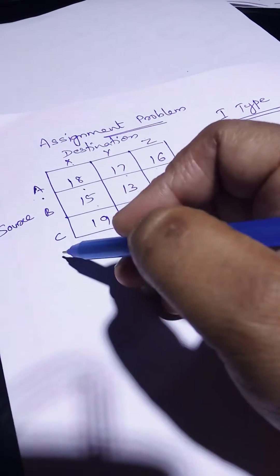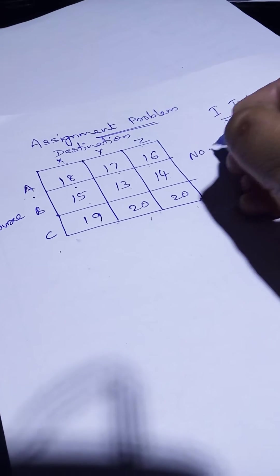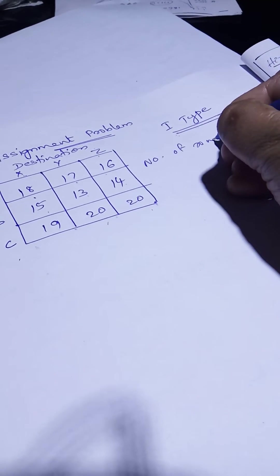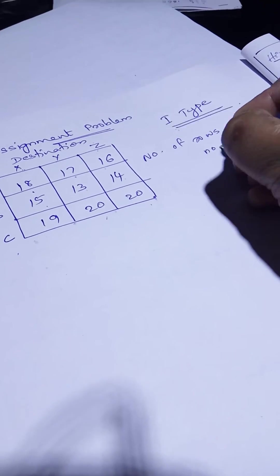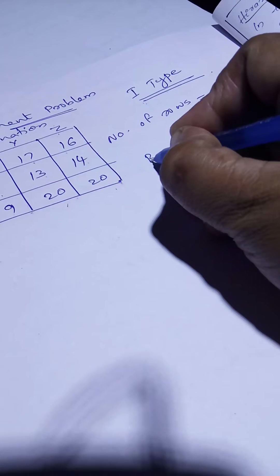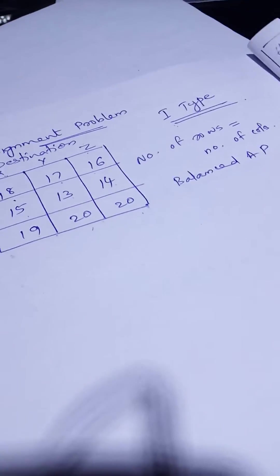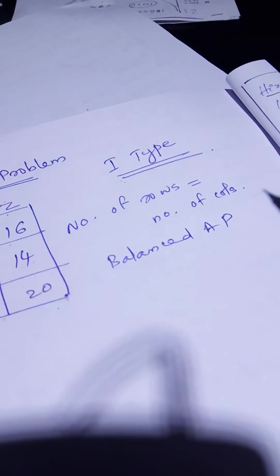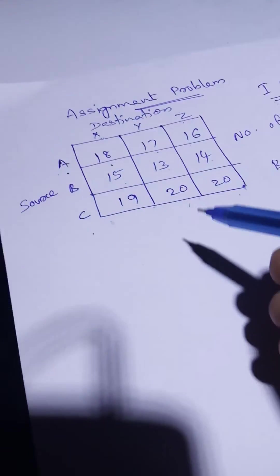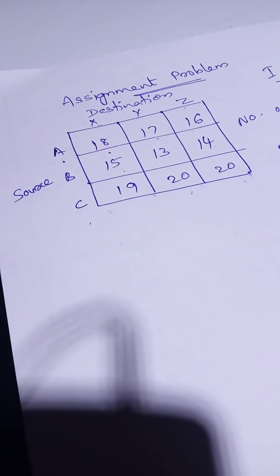To check balance, verify the number of rows and the number of columns. Here, the number of rows is equal to the number of columns, so we can write it as balanced. It is balanced because the number of rows equals the number of columns.